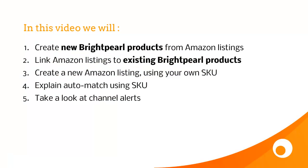In this video, we're going to create new Brightpearl products from Amazon listings if they don't already exist, and where a product does already exist in Brightpearl, we're going to link it to the Amazon listing. I'm going to show you how to create a new Amazon listing using your own SKU, rather than the Amazon auto-assigned SKU, which makes it easier to connect products later using the auto-matching system in Brightpearl, whereby if the two systems have the same SKU, the products will match by themselves. At the end of the video, we'll look at the alerts that Brightpearl gives you when products are found that don't match.